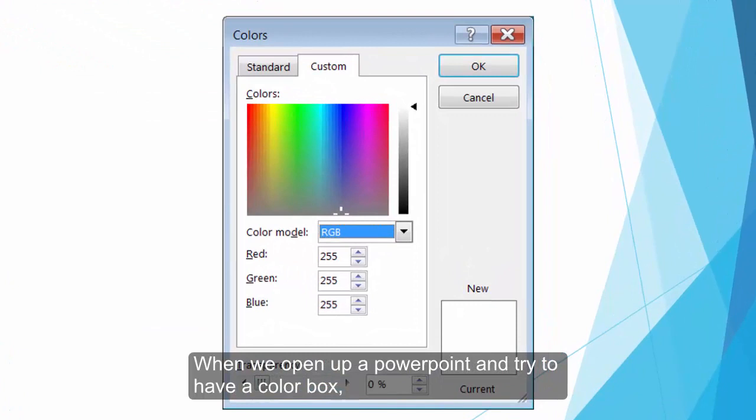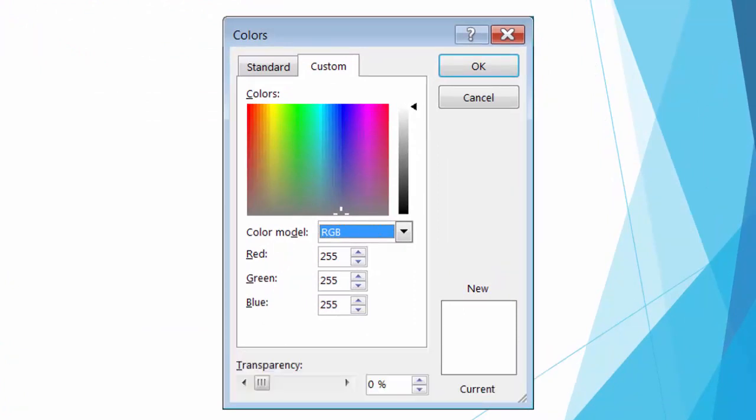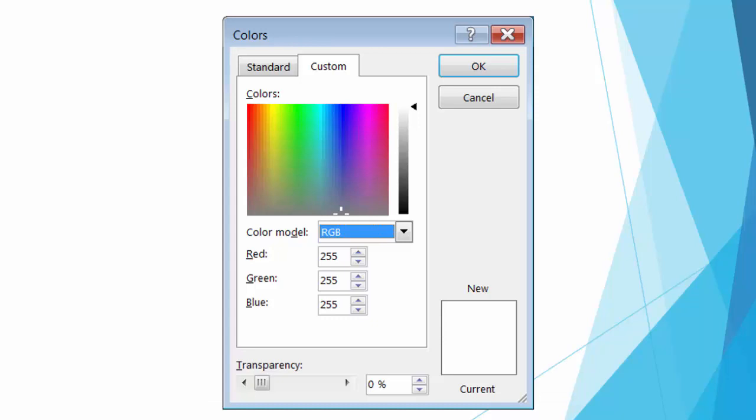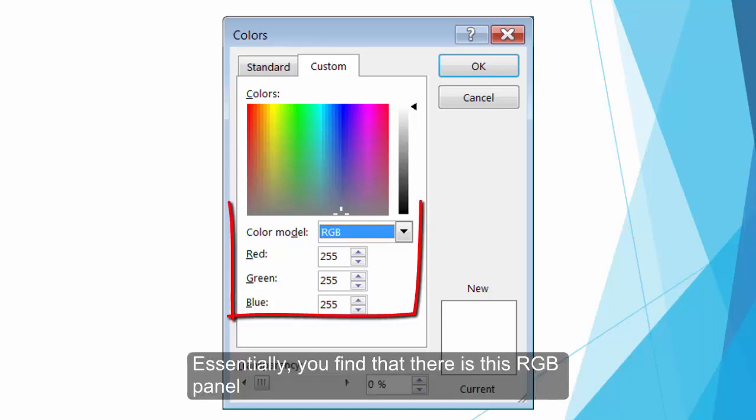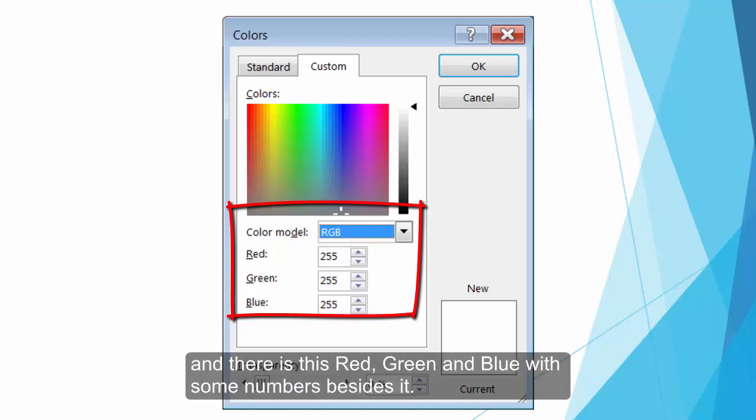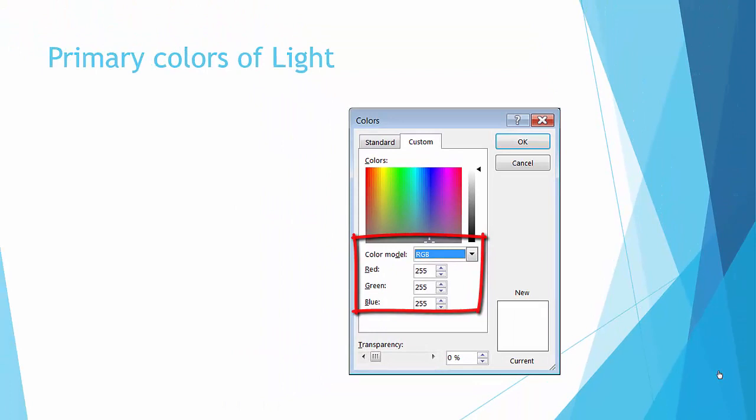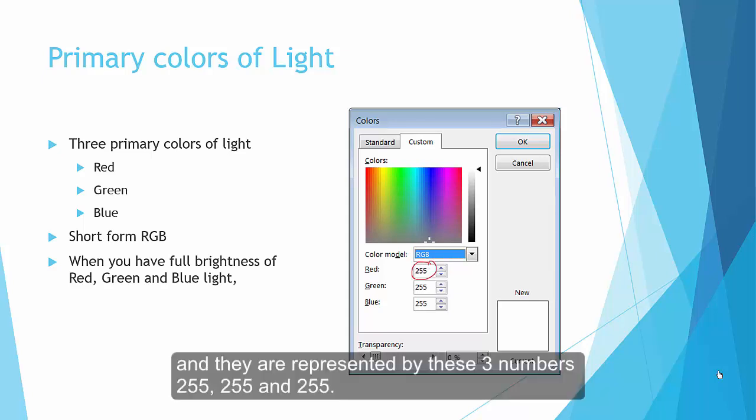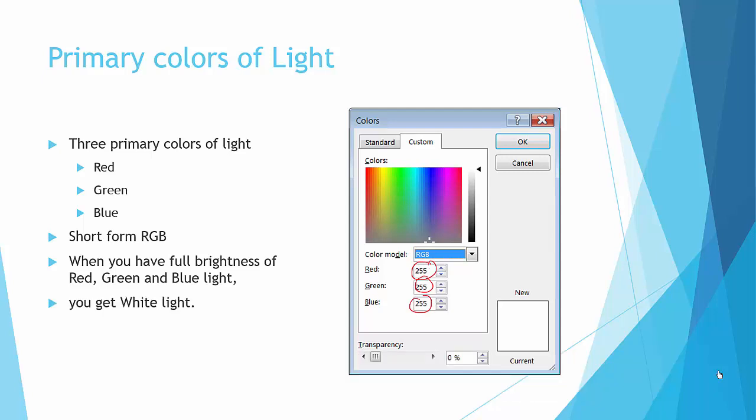When you open up PowerPoint and try to have a color box or something, you find that sometimes you can actually customize your color, and you see all this color panel. Of course, you can choose the color from here, but essentially you find that there are three: this RGB thing, and then there's red, green, and blue, and there's some numbers. Actually, the primary colors of lights are red, green, and blue, and of course the short form for this is RGB. When you have full brightness of red, green, and blue light, which is represented by these three numbers 255, 255, and 255, you find that the color is actually white.